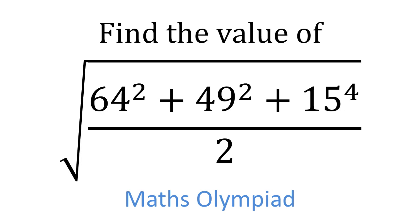We need to find the value of the square root of 64 squared plus 49 squared plus 15 to the power of 4 all over 2.